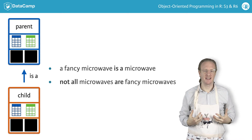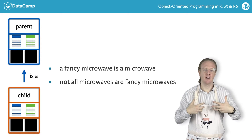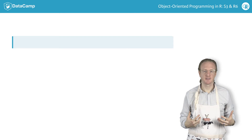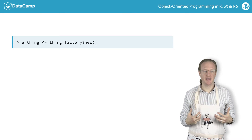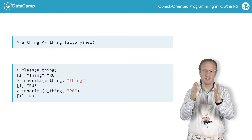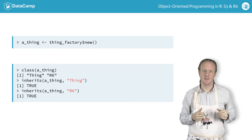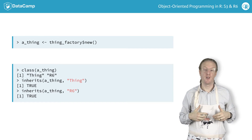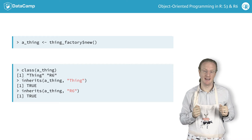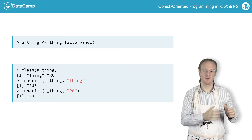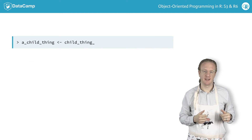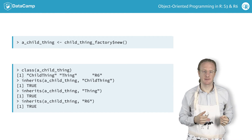This translates into how classes are ascribed to R6 objects. The class of a thing is a character vector of thing and R6 — that is, the thing object inherits from thing and it inherits from R6. The class of the child thing also includes child thing.